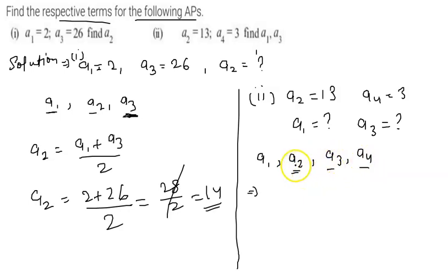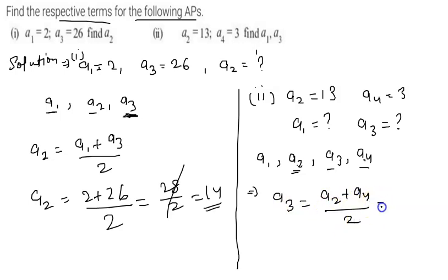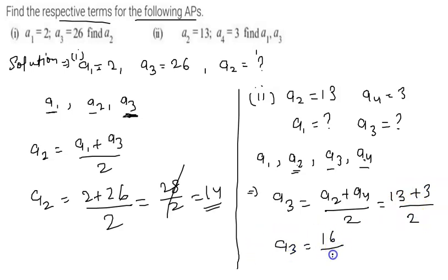a3 is the middle term of a2 and a4, so we can find a3 as (a2 + a4) divided by 2. a2 is 13 and a4 is 3, so a3 equals (13 + 3) divided by 2, which is 16 divided by 2, giving a3 equal to 8.